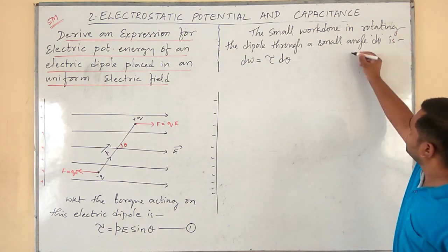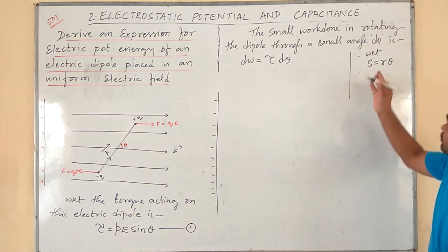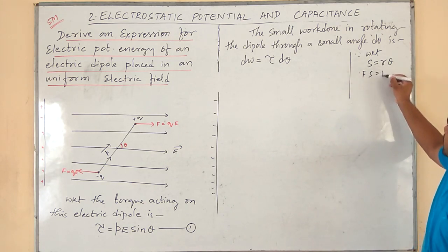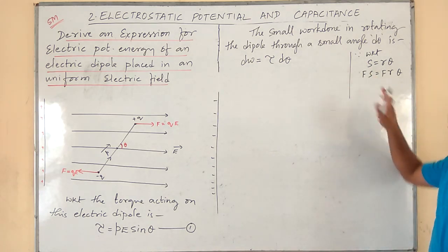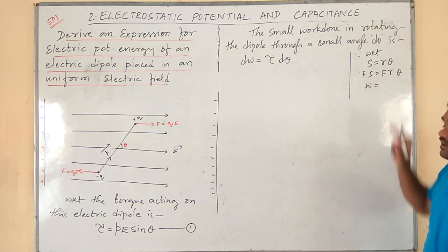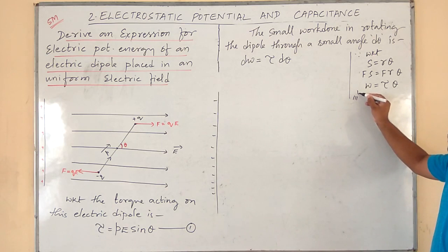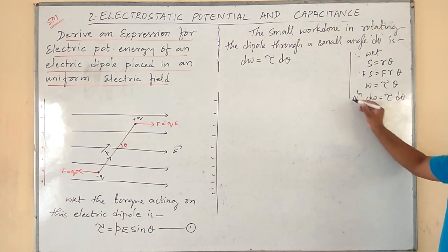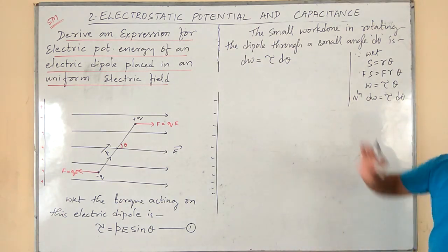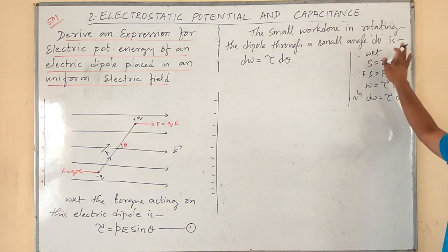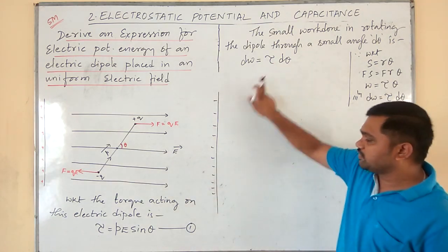To understand how dW = τ dθ comes: we know that arc length s = rθ. Multiplying both sides by F gives Fs = Fr · θ, where Fs is work done W and Fr is torque τ. So W = τθ, and for small angles, dW = τ dθ. From equation number one, substituting τ = pE sinθ, we get dW = pE sinθ dθ.